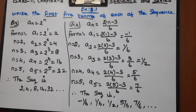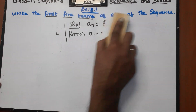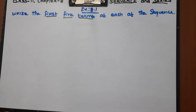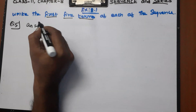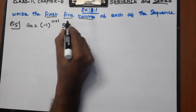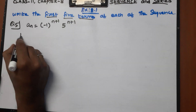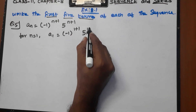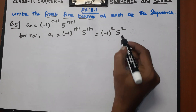Next, question number 5: an equals (minus 1) to the power (n plus 1) into 5 to the power (n plus 1). For n equal to 1: a1 equals (minus 1) to the power 2 into 5 to the power 2. Minus 1 squared is 1, 5 squared is 25, so a1 equals 25.